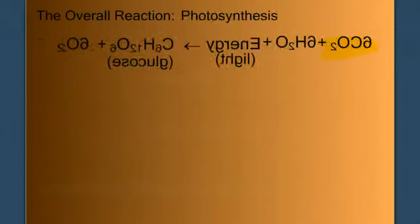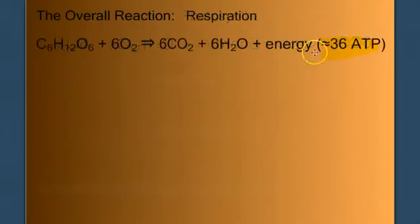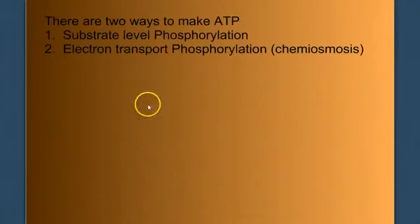Now let's keep in mind what it is we're trying to do. We're trying to make ATP. So we need to talk about how ATP is actually made. It turns out there are two ways to make ATP. Substrate level phosphorylation and electron transport phosphorylation, which is driven by chemiosmosis.